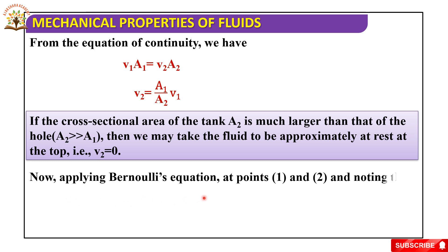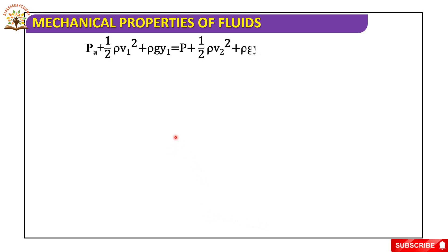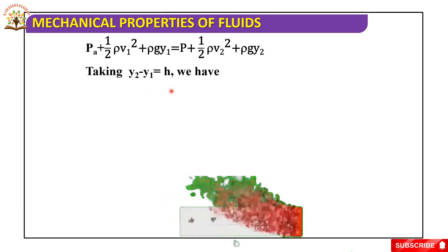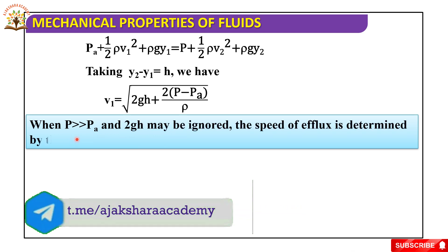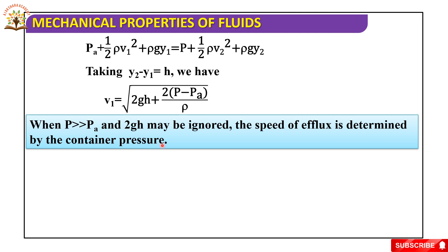Now, applying Bernoulli's equation at points 1 and 2 and noting that at the hole, p1 equals pa, that is atmospheric pressure. From the Bernoulli's principle, pa + (1/2)ρv1² + ρgy1 equals p + (1/2)ρv2² + ρgy2. Here, y1, y2 are the heights. Taking y2 - y1 equals h, we have v1 equals square root of [2gh + 2(p - pa)/ρ].